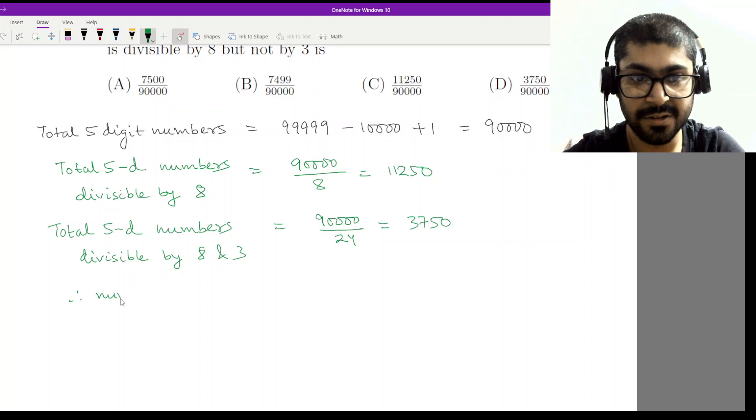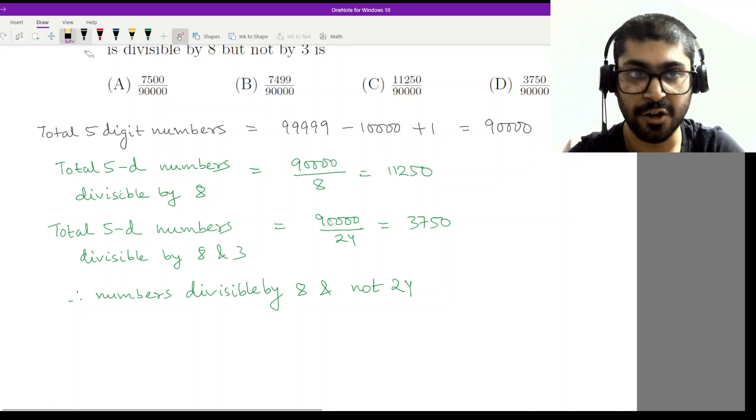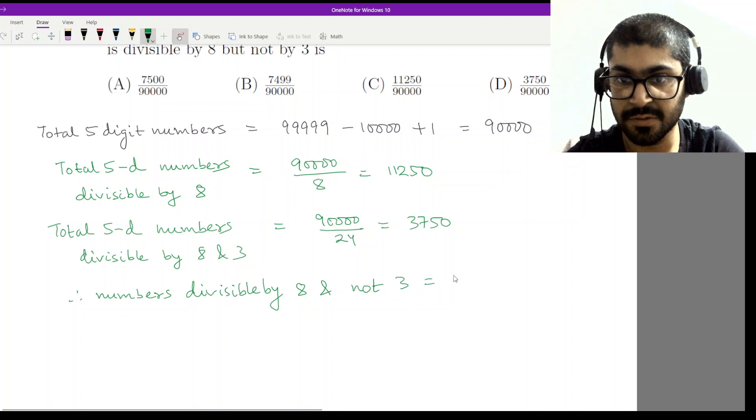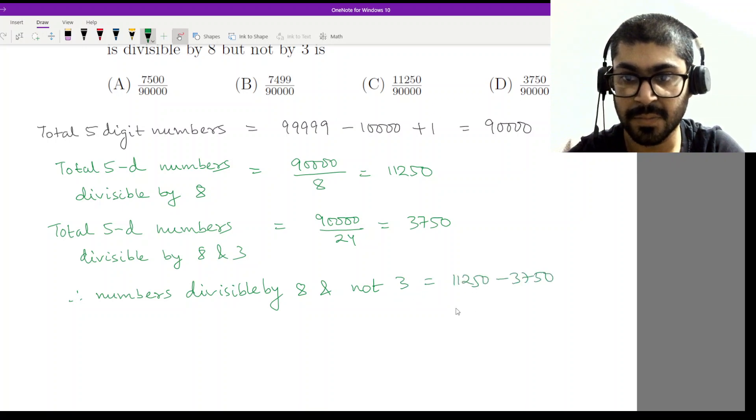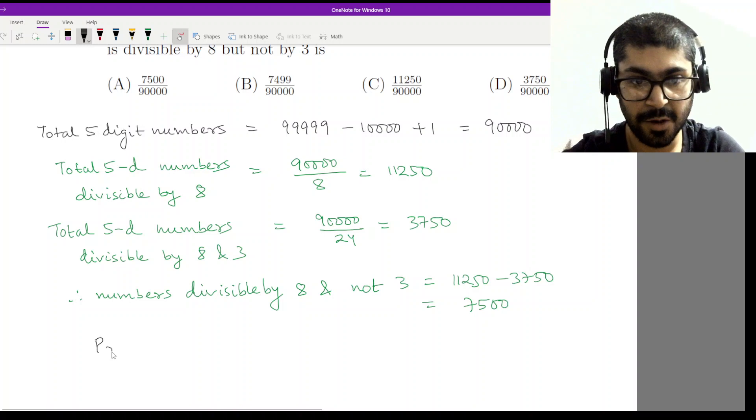Therefore, numbers divisible by 8 and not 3, I just have to subtract these two. 11,250 minus 3,750 equals 7,500.